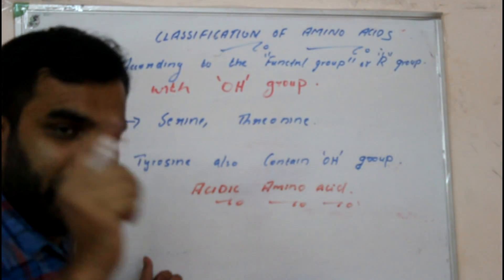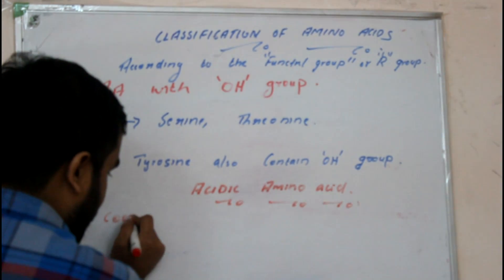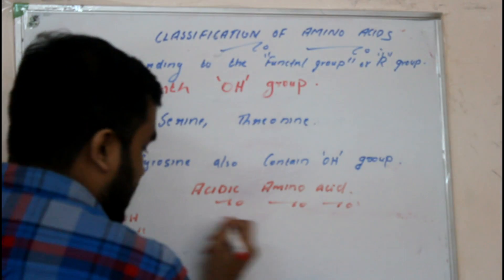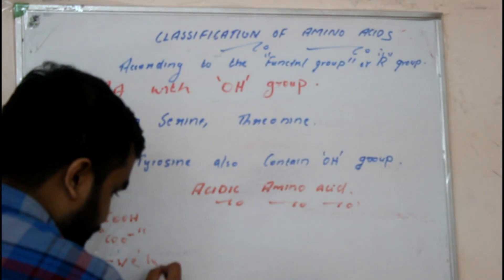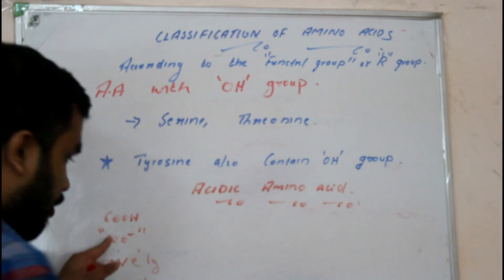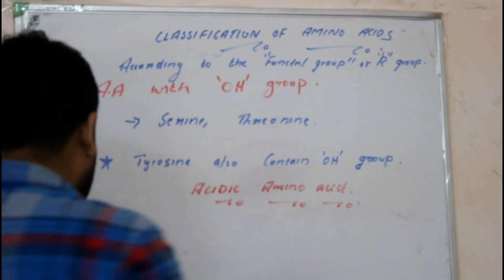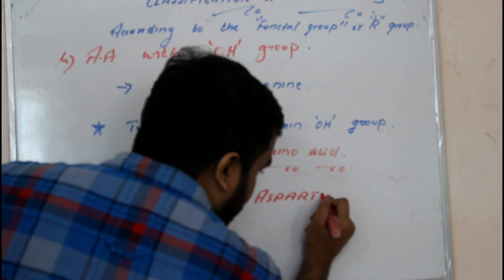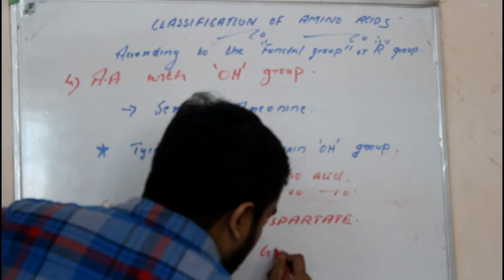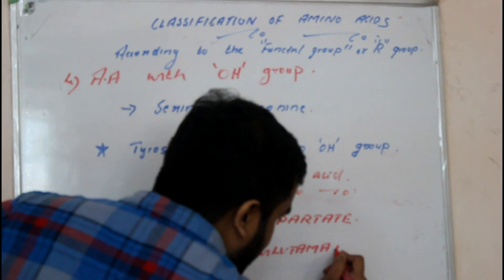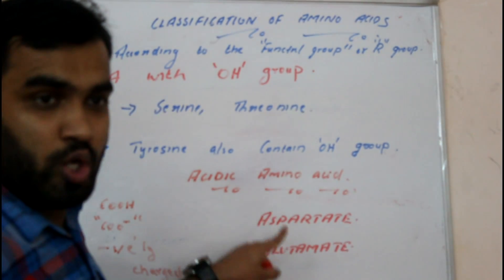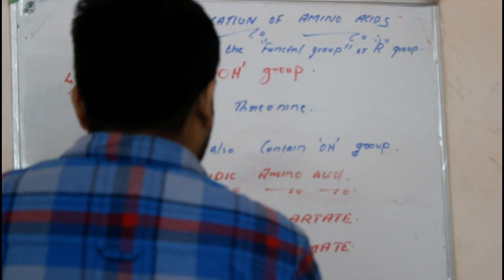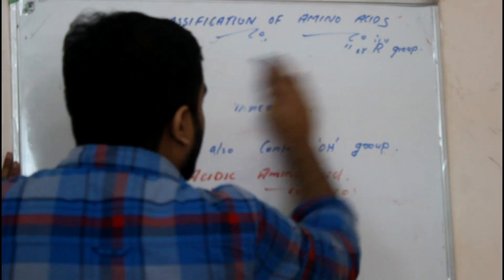The next group is acidic amino acids. Whenever acid comes to mind, think of the COOH group — it will form the COO⁻ ion plus H⁺, so it is negatively charged. The examples of acidic amino acids are aspartate and glutamate.